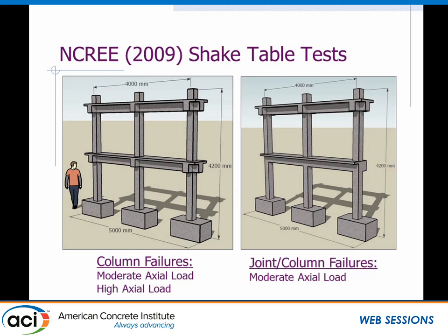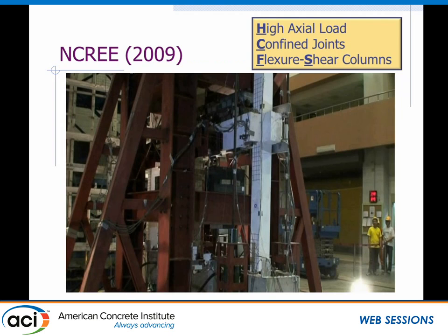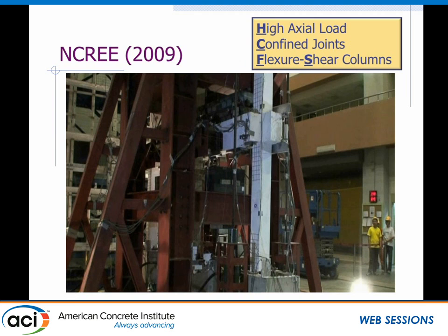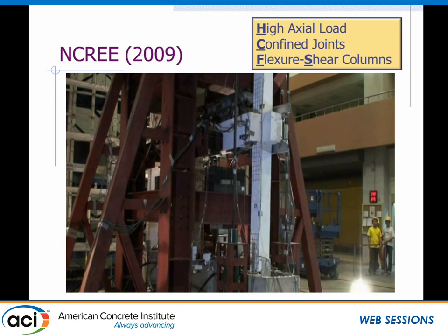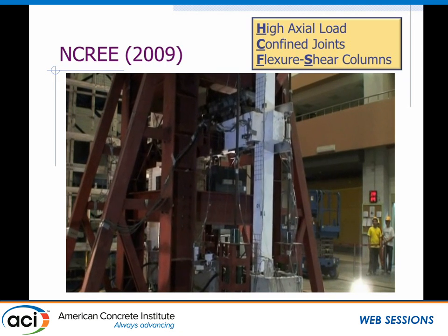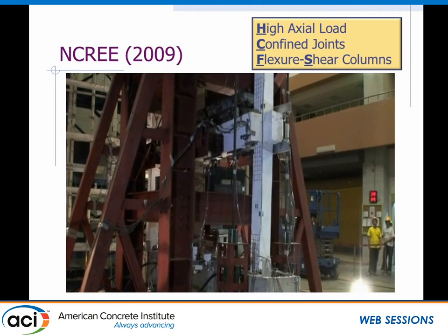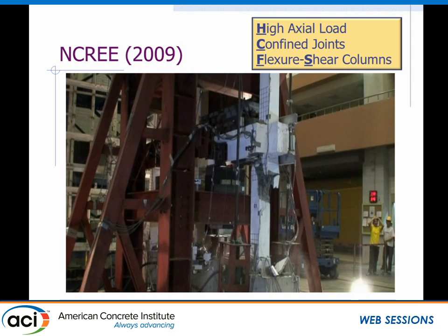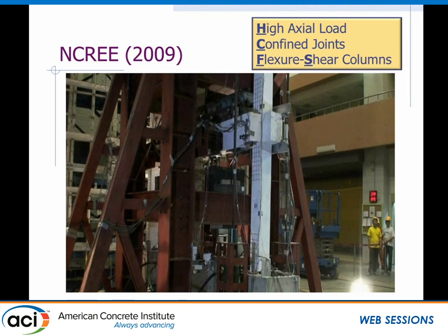I'd like to show you another test — the most recent set from NCRI. This is a two-story frame with a series of tests looking at both joint failures and column failures. I want to focus on the high-axial load test focused on column failures. There's a very large steel frame that obscures the view, but watch the end column. Notice in this case how quickly it goes — from shear failure straight into axial failure and shortening.